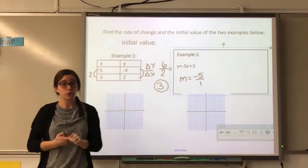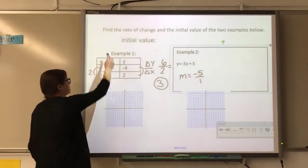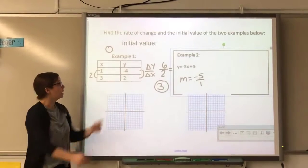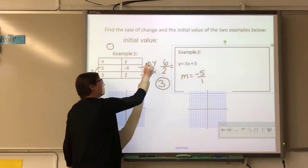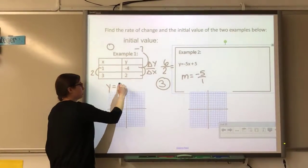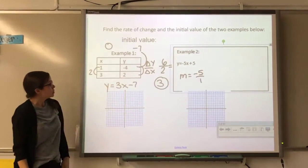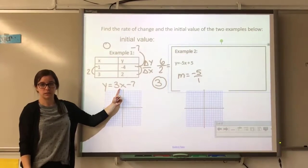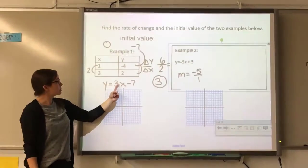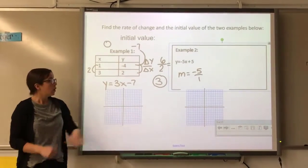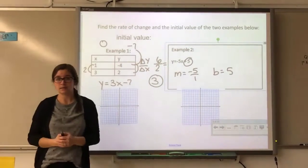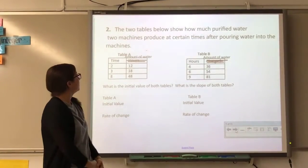Now let's find the initial value, or y-intercept. When you have a table and they don't give you the y-intercept, you're finding the zero term — when x is 0, what is y? When x was 1, y is negative 4 and slope is 3, so going back one step I subtract 3: my y-intercept is negative 7. I can check: 3 times 0 minus 7 is negative 7, and 3 times 1 minus 7 is negative 4. For the equation, my y-intercept is the constant: 5.